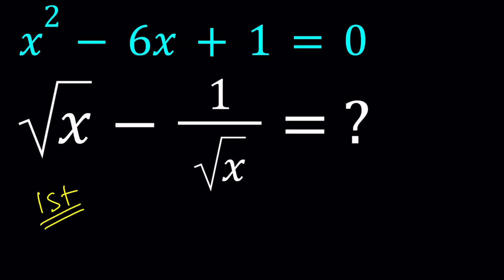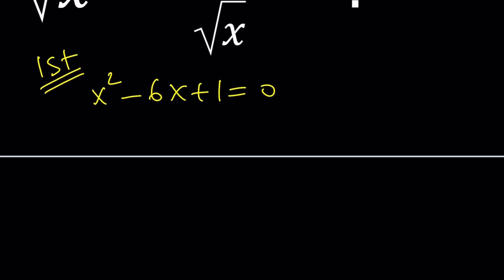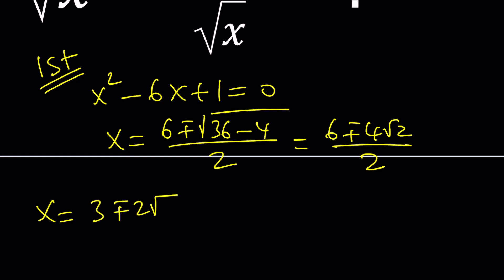For my first method, I'm going to solve the first equation because why not? It's easy, it's a quadratic, we can use the quadratic formula or completing the square. x equals negative b plus minus the square root of b squared which is 36 minus 4a, that'll be 4, and divide by 2a which is 2. 36 minus 4 is 32, the square root of 32 can be written as 4 root 2. 6 plus minus 4 root 2 divided by 2, and we can simplify it as 3 plus minus 2 root 2.